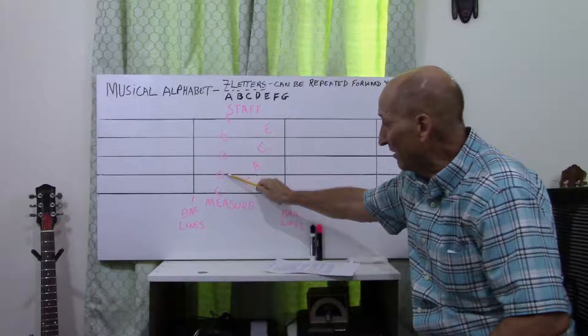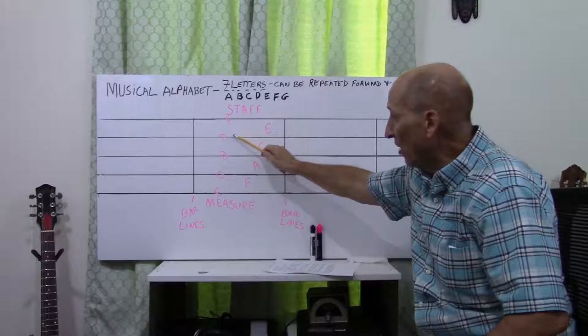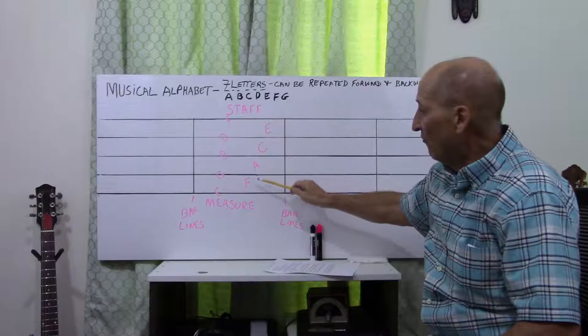First line, E. Second line, G. Third line, B. Fourth line, D. Fifth line, F.